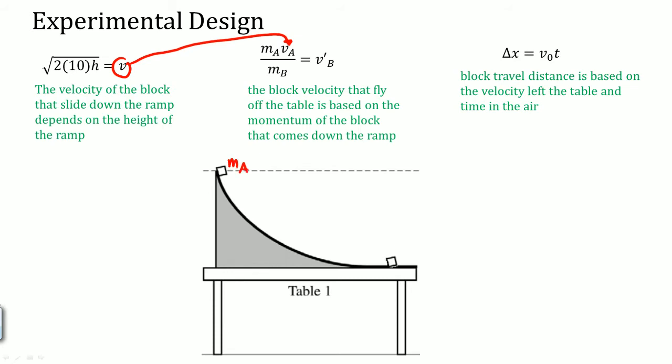Because that's the velocity in which the block is coming down. This is basically MA and this is MB. This is the velocity that's going to be this one, because that's the velocity of the block that flies off the table.